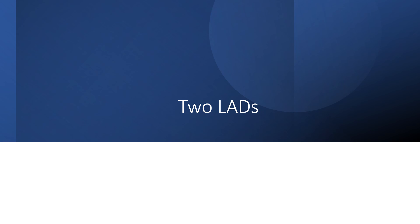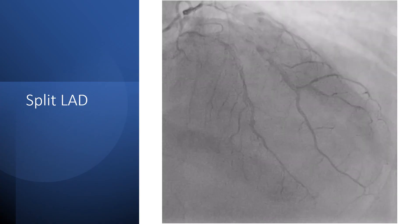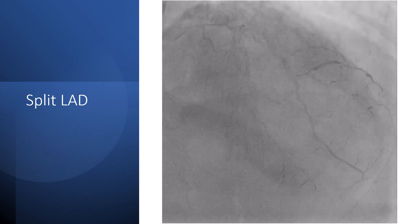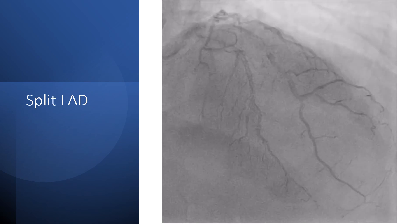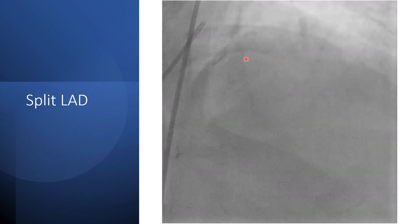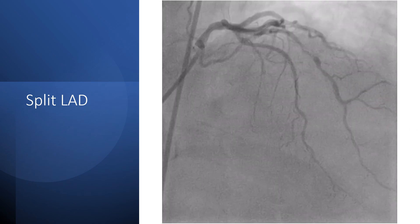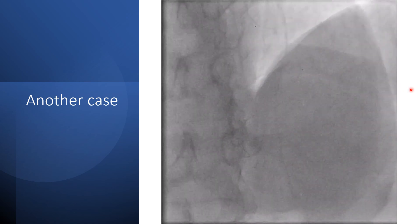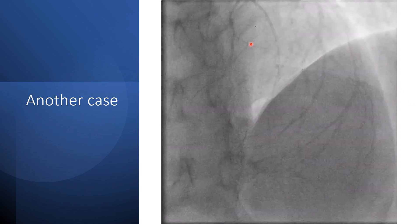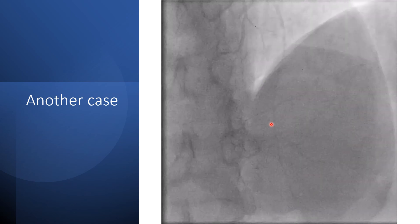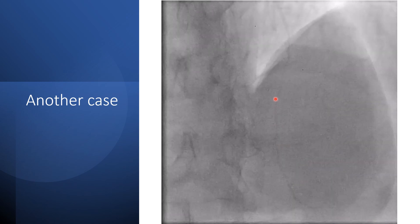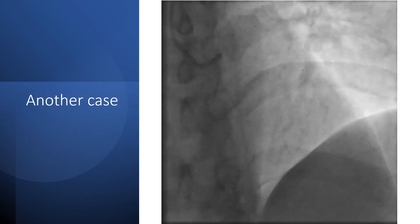Now we come to a condition where there are two LADs. There are different classifications, some of them are fancy, but we'll present what is simple and practical. First, we have what is called split LAD, which is actually a normal variant: two LADs running along the interventricular groove, one supplying the septal branches and the other supplying the diagonal branches. In this other case of split LAD, the other LAD is subtotally occluded and faintly visible running alongside the first one.